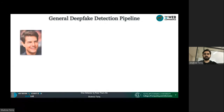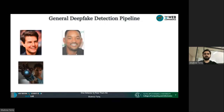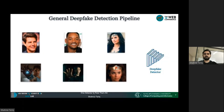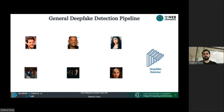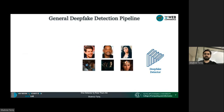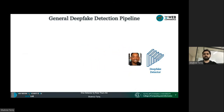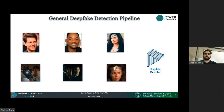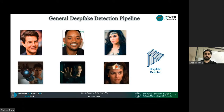Now let's talk about the general deepfake detection pipeline as observed in recent research articles. Usually we have a dataset containing real and deepfake videos. These deepfake videos are used to train a deepfake detector, mostly a binary classifier. Once fully trained, the detector can accurately classify new images provided during the testing phase. We also observed that most detectors demonstrate high performance on these datasets, and we will discuss this later.